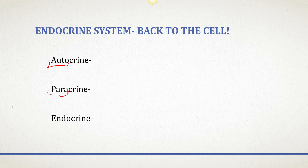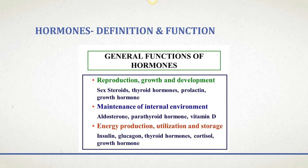A hormone is a chemical messenger that can stimulate a response in a target organ. Hormones aid in reproduction, growth, and development — examples include sex steroid hormones, thyroid hormones, prolactin, and growth hormone. They help maintain homeostasis — examples include aldosterone, parathyroid hormone, and vitamin D. They also aid in energy production, utilization, and storage — examples include insulin, glucagon, thyroid hormones, cortisol, and growth hormone.